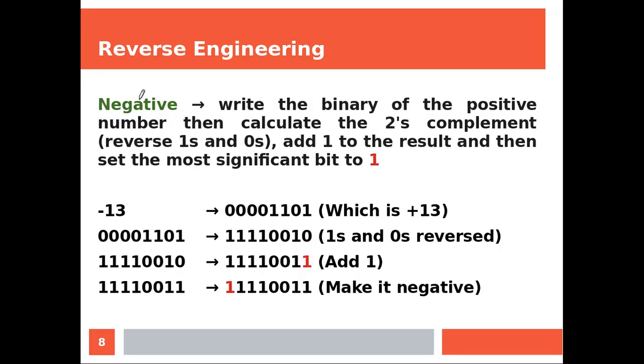Let's have a look at the negative. A bit more work but not that much. So you'll need to write the binary of the positive number and then you calculate the two's complement which is about reversing ones and zeros. Then you add one to the result and then you make sure that the leftmost number is one. Let's have a look at this example. So that's plus 13 because it's one plus four plus eight and then you're reversing zeros and ones and then you add one and then nothing else needs to be done because the leftmost is already one. So that's minus 13.